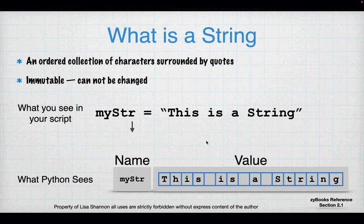What Python sees is a variable called 'meister', and what Python does with what's in those quotes is it creates a list of characters — just an ordered list, each character after the other. You'll also notice the quotes are not part of the string; the quotes are a notation to Python that this is a string. So when we're looking at the length of a string, you're only talking about the length of what's in between the quotes.